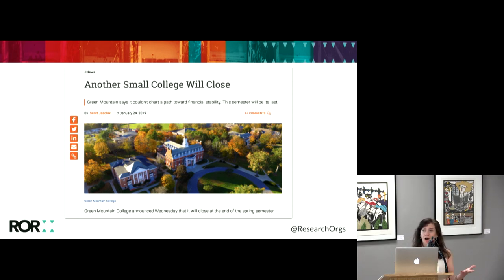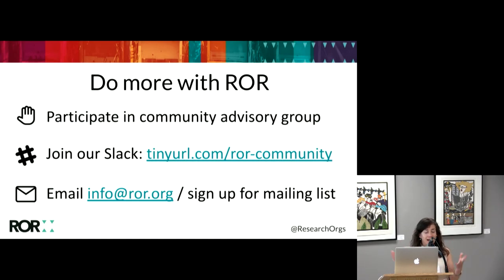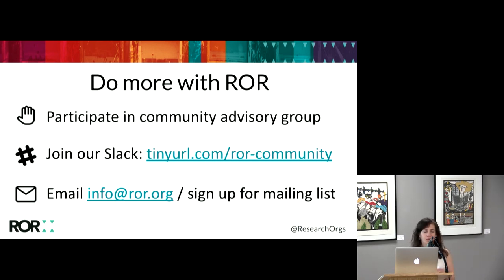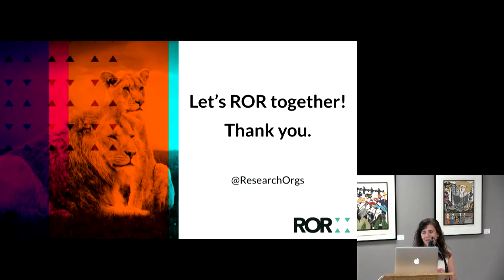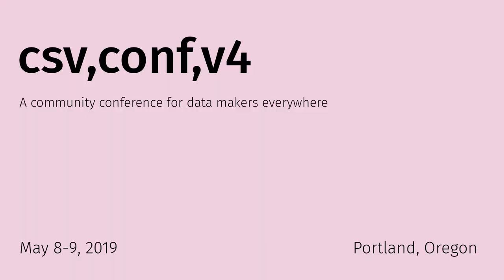There are a lot of ways to be involved. We have a community advisory group and a Slack workspace. You can email info@ROAR.org — that goes to me. We're on Twitter at research orgs. We're encouraging as many people to get involved in this effort as possible. If you are interested in organizational IDs, affiliations, disambiguation, or data governance, please come talk to me — I would love to talk to you. Thank you.